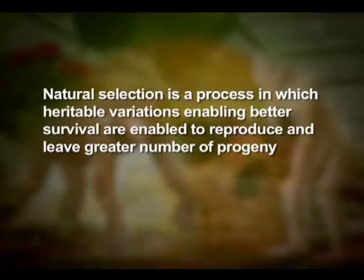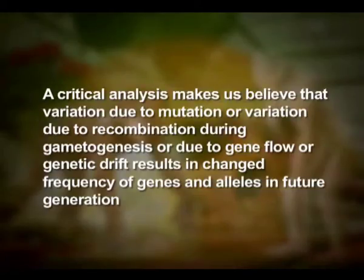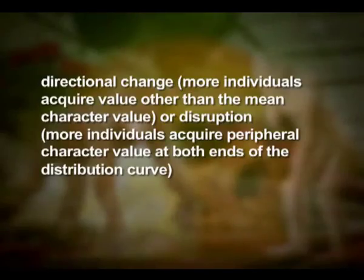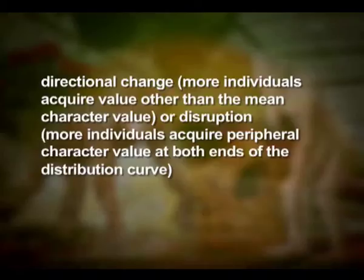Natural selection is a process in which heritable variations enabling better survival allow organisms to reproduce and leave a greater number of progeny. Variations due to mutation, recombination during gametogenesis, gene flow, or genetic drift result in a change in the frequency of genes and alleles in future generations. Coupled with enhanced reproductive success, natural selection makes populations look different. Natural selection can lead to stabilization — where more individuals acquire the mean character value — directional change — where more individuals acquire a value other than the mean — or disruption — where more individuals acquire peripheral character values at both ends of the distribution curve.